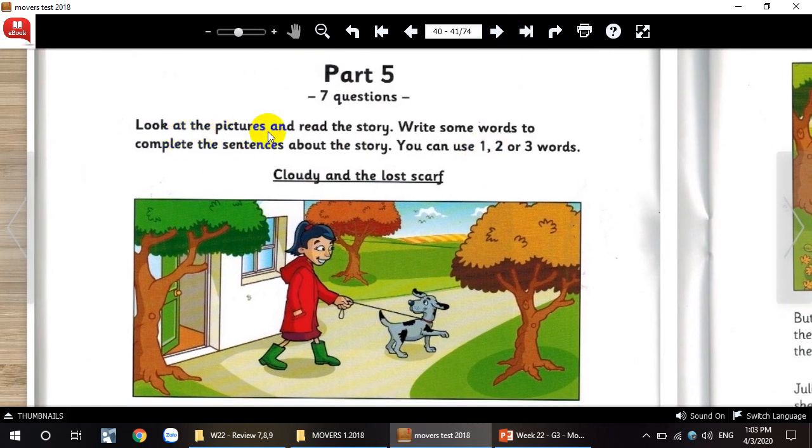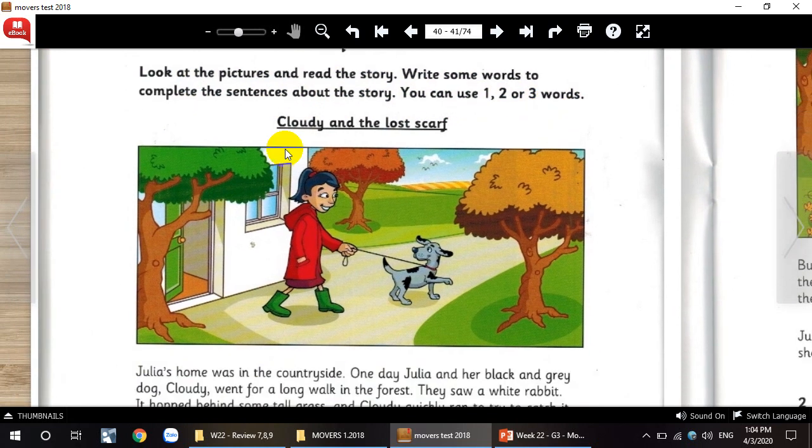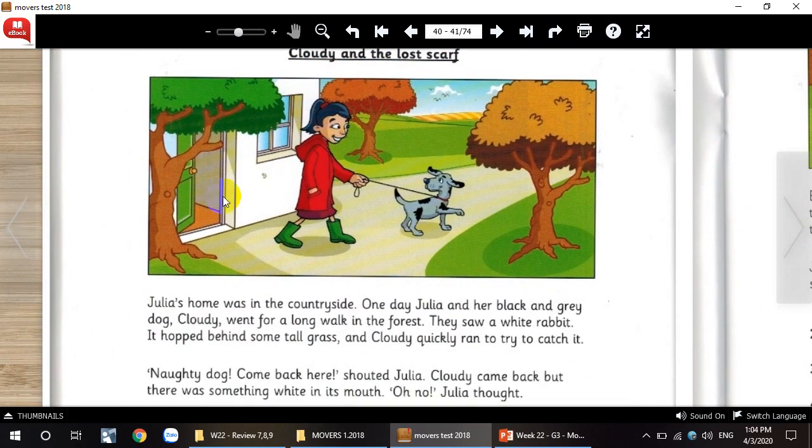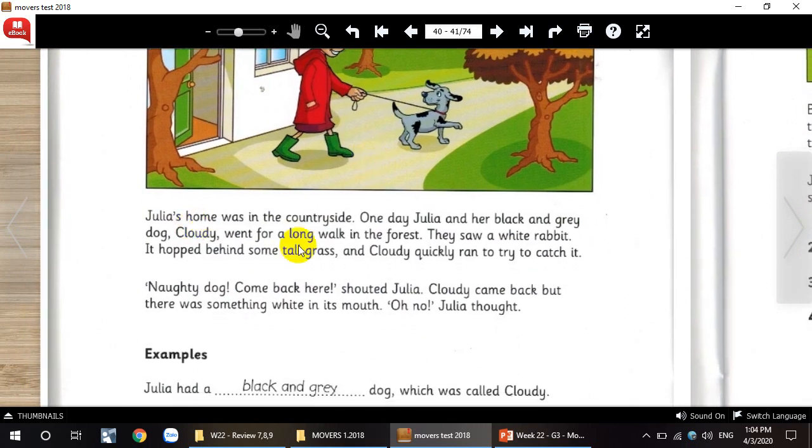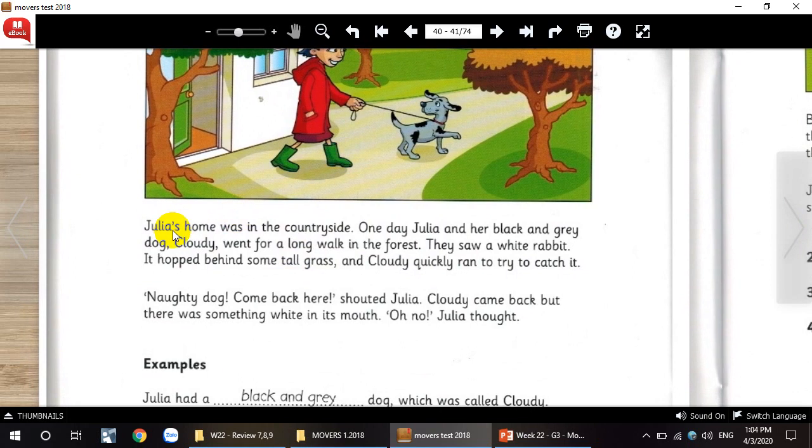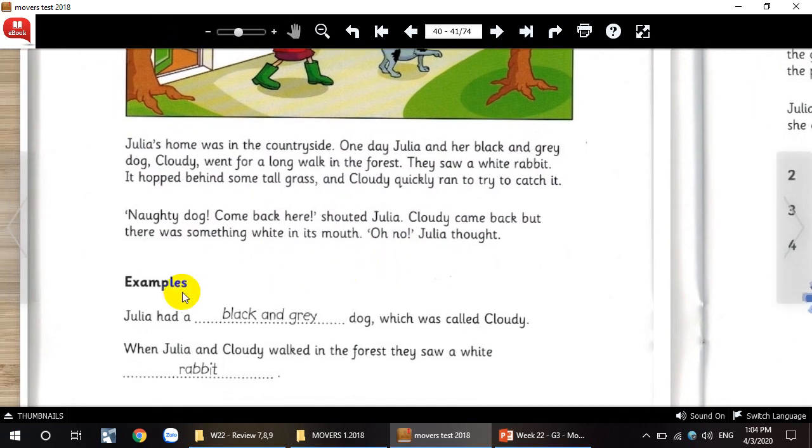Look at the pictures and read the story. Write some words to complete the sentence about the story. You can use one, two or three words. The topic is Cloudy and the lost scarf. Look at here, one girl and one dog. This girl named Julia. Julia's home was in the countryside. One day, Julia and her black and grey dog, Cloudy, went for a long walk in the forest. They saw a white rabbit. It hid behind some tall grass. And Cloudy began to try to catch it. Naughty dog, come back here, shouted Julia. Cloudy came back but there was something white in its mouth. Oh no, Julia thought.